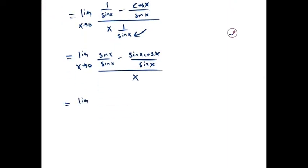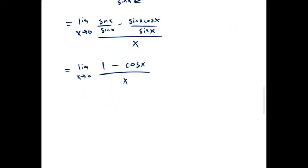And that gives us the limit as x approaches 0 of 1 minus cos x over x, which is one of the limits that we had to memorize, and this is just 0.